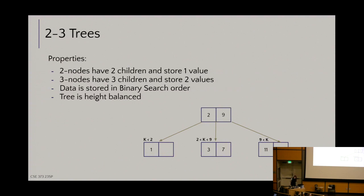Meet the two-three tree. The name stands for the two different types of nodes. Two-nodes have two children but one data point — just like a regular node. In a two-three tree, a two-node stores one value with an empty bucket, and then two children.